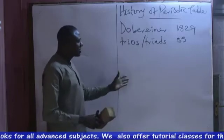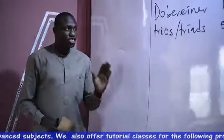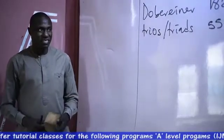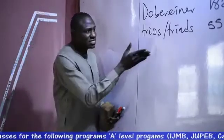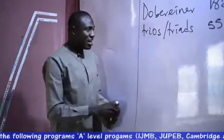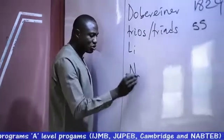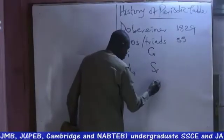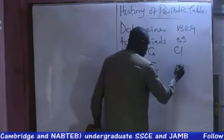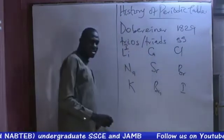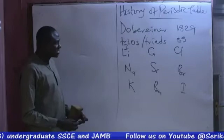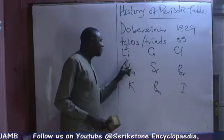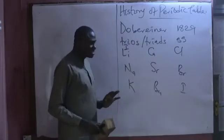The law states that elements can be arranged into three groups, with each group consisting of three members of similar chemical characteristics. Interestingly, the triads of Dobereiner consist of: lithium, sodium, potassium — the first triad; then calcium, strontium, barium — the second; then chlorine, bromine, and iodine. And Dobereiner pointed out that the middle element of a triad has an atomic weight that is approximately the average of the other two members in the group.